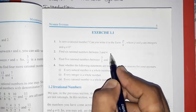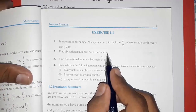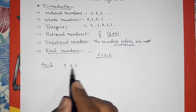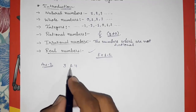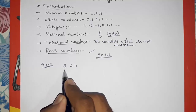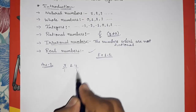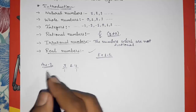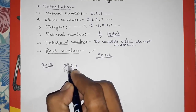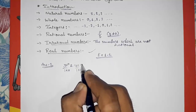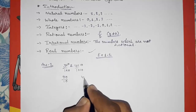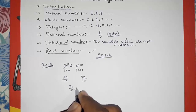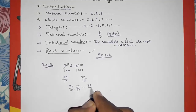Question number 2: Find six rational numbers between 3 and 4. There are two methods and I'm going to solve by both. In method one, we write 3 and 4 with denominator 1, then multiply both numerator and denominator by 10 on both sides. This gives us 30 by 10 and 40 by 10, and we can find 31/10, 32/10, 33/10 up to 39/10 as rational numbers between 3 and 4.